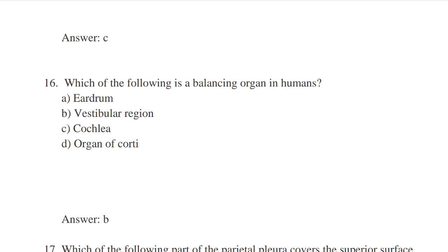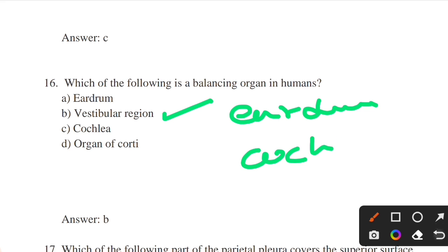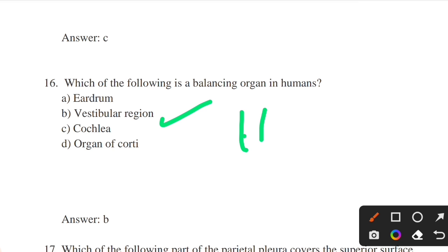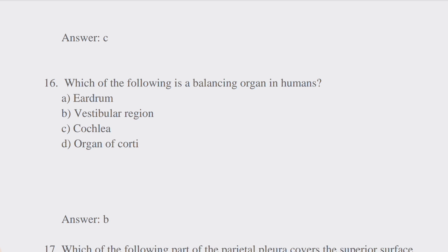Which of the following is a balancing organ in humans? Options: eardrum, vestibular region, cochlea, organ of Corti. Answer: option B — vestibular region. The vestibular region is the central part of the inner ear, situated medial to the eardrum and behind the cochlea. It contains the organ of hearing (cochlea) and the organ of balance (labyrinth).